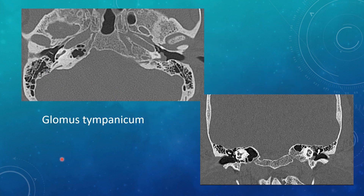A glomus tympanicum is a vascular tumor of the middle ear cavity. The classic location is the cochlear promontory — where the cochlea juts out to the middle ear cavity. A soft tissue mass along that cochlear promontory, especially if it has a little polypoid appearance and is smoothly marginated, is a classic location and appearance for a glomus tympanicum.